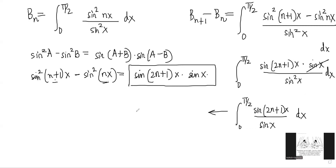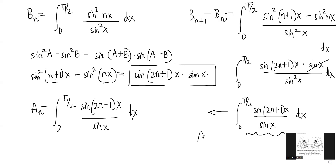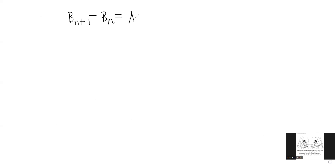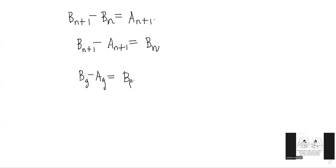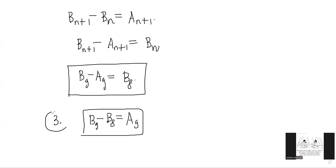This expression is of exactly the same form as aₙ. Recall that aₙ = integral from 0 to π/2 of sin(2n−1)x divided by sin x dx. What we have here is clearly aₙ₊₁. So we get the nice result: bₙ₊₁ minus bₙ = aₙ₊₁. Rearranging: bₙ₊₁ minus aₙ₊₁ = bₙ. Putting n=8 gives b₉ minus a₉ = b₈. Also, from bₙ₊₁ minus bₙ = aₙ₊₁, putting n=8 gives b₉ minus b₈ = a₉, which is option 3. Option 4 is therefore incorrect.